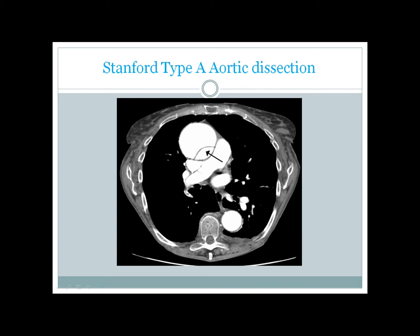Here you can see the great vessels, especially this big one which is the ascending aorta. In this ascending aorta you can see a false lumen forming, and here you can see the flap of aortic intima that is torn off from the main wall and going inside the vessel wall. So here a false lumen is being formed inside the wall of the aorta.